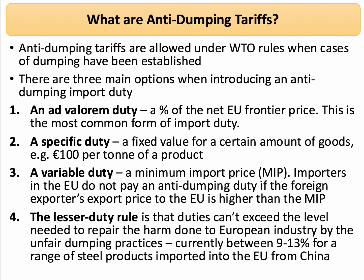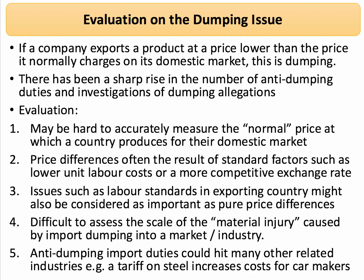Going back to the chart: why is Chinese steel cheaper than European steel? In part it could be economies of scale, labour costs, and productivity. A third evaluation point is that dumping focuses on price and cost, but many economists now taking a wider, holistic view ask: what about labour standards in the exporting country? Should that be a factor when thinking about trade protectionism?